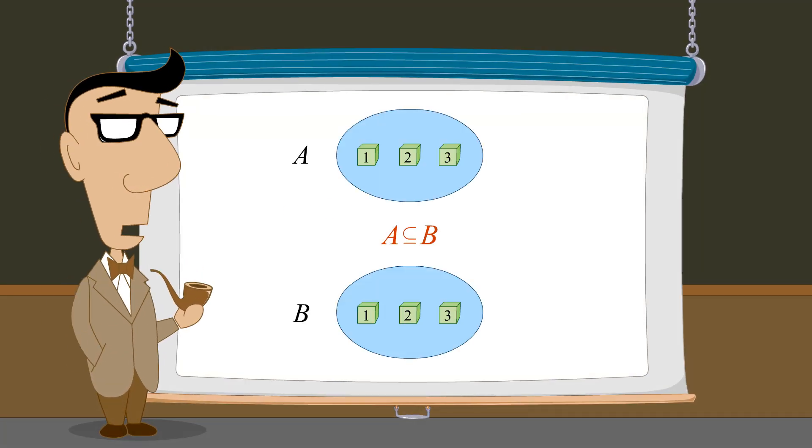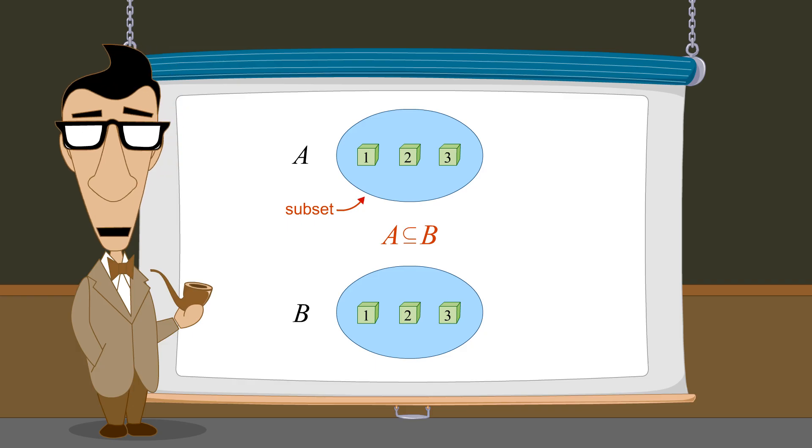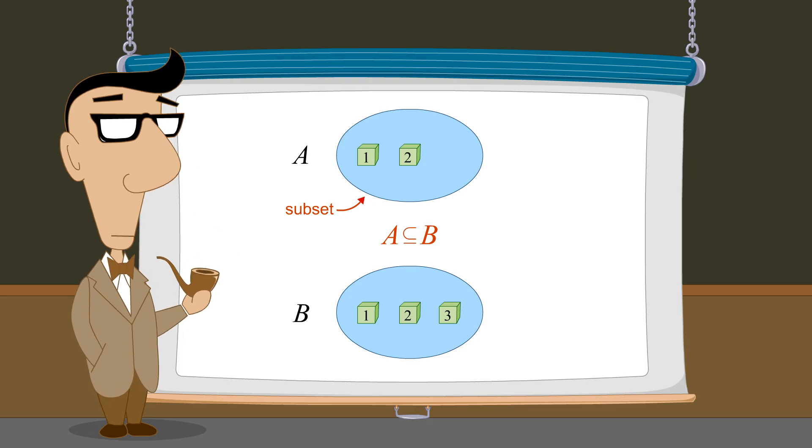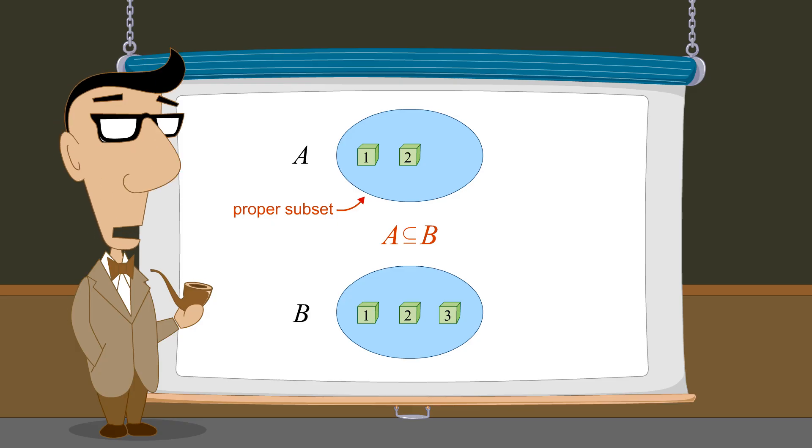So the subset symbol can be used whenever all the elements of A are also members of B, whether A has the same number of elements as B, or has fewer elements. But when A has fewer elements, we can be more specific and call A a proper subset of B. We denote this using the proper subset symbol, which is the subset symbol without the line underneath.